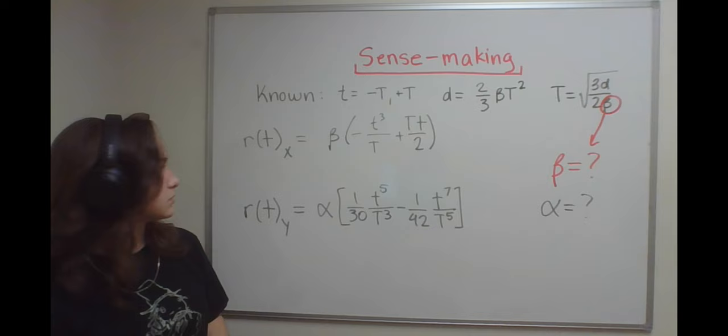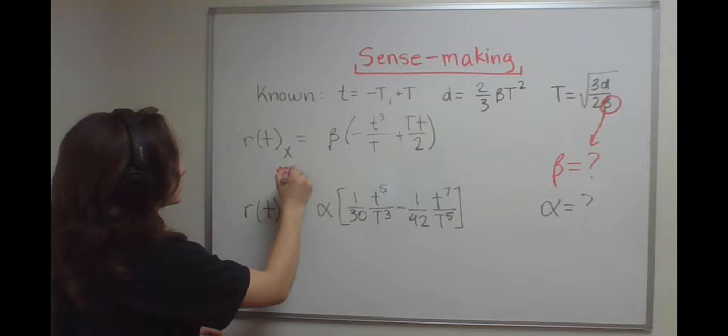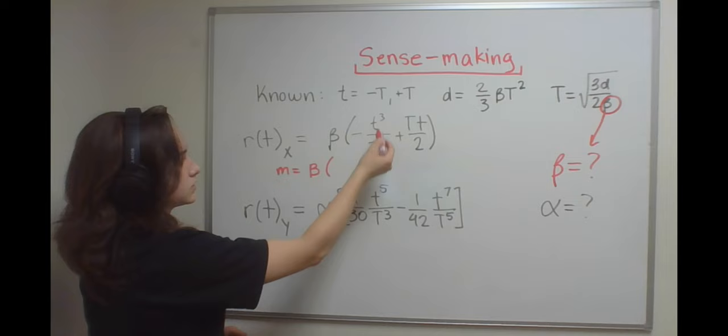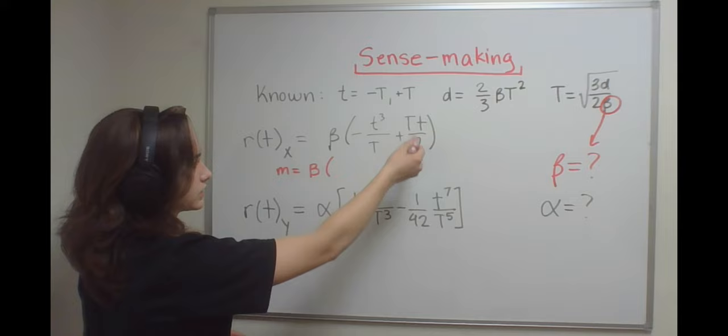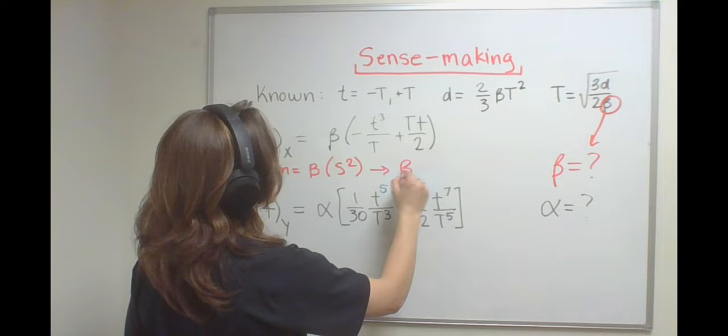So if you simplify each of these, you should get distance in meters equals beta times seconds over seconds. Seconds cubed over seconds squared gives you seconds squared, which means that beta has units of meters per second squared, which is an acceleration.